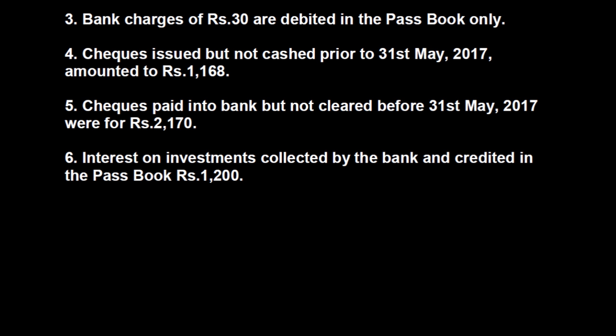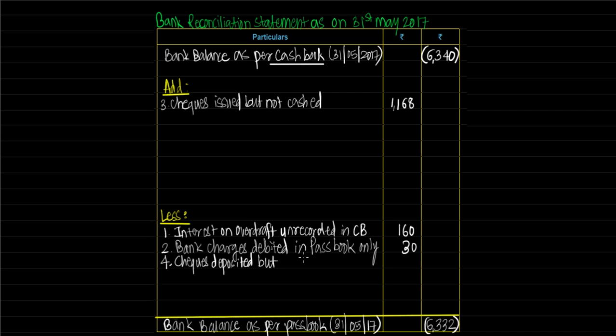Cheques paid into bank but not cleared before 31st May 2017 were Rs 2,170. This transaction is the other way round — we have received some cheques and deposited them into the bank, which means we have entered those receipts into the bank column of our cashbook. So cashbook balance is more by Rs 2,170, meaning passbook balance is less by Rs 2,170. To land upon passbook balance, we would have to deduct this Rs 2,170. We write: cheques deposited but not cleared — amount Rs 2,170.